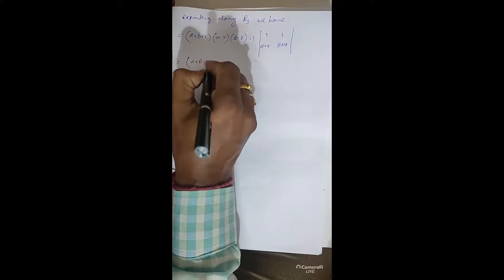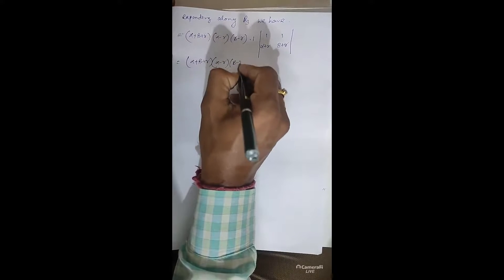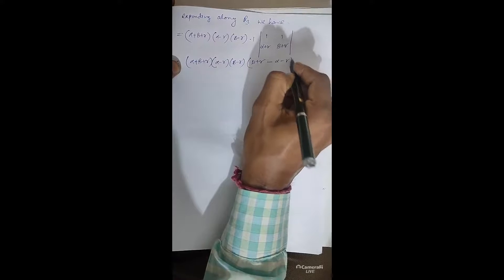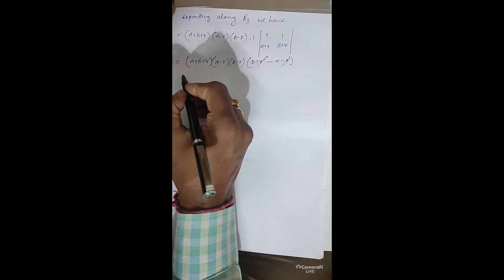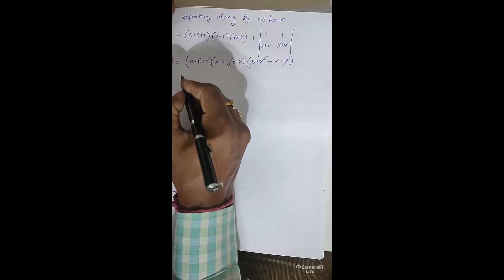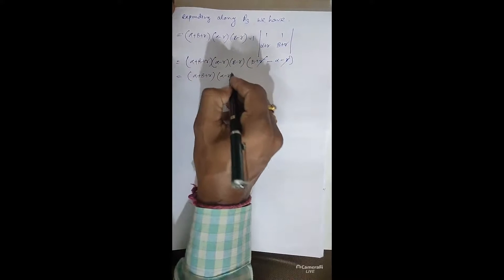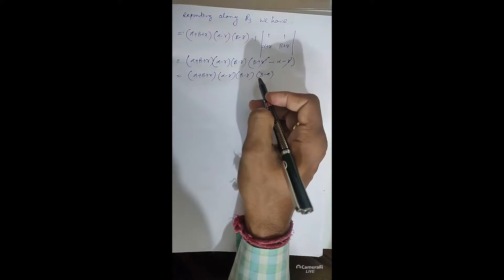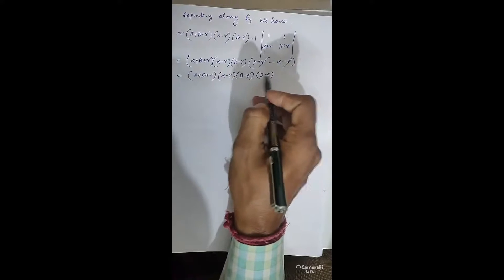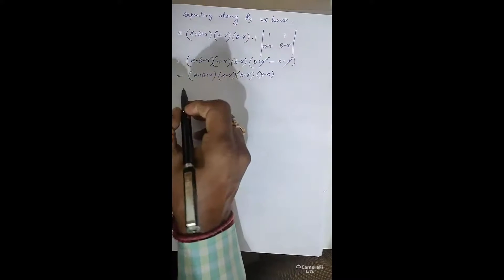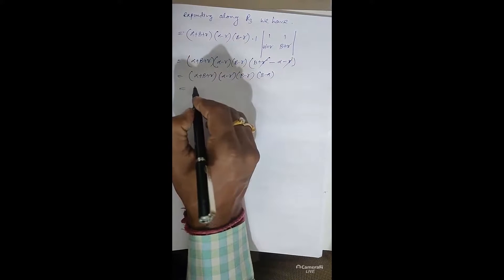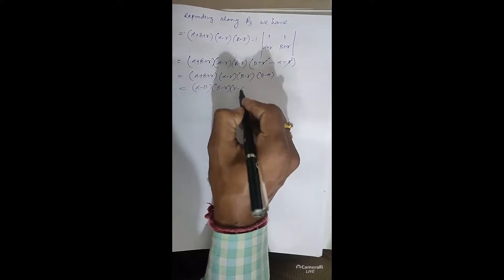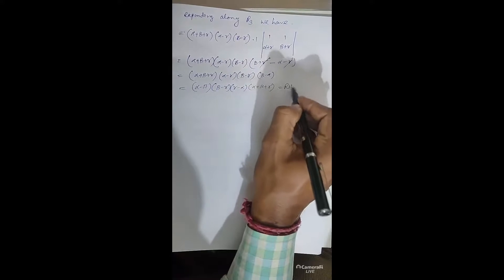Therefore we have (α+β+γ)(α−γ)(β−γ)(β−α). Taking −1 common from (α−γ) gives (γ−α), and taking −1 common from (β−α) gives (α−β), with both negatives cancelling. So this equals (α−β)(β−γ)(γ−α)(α+β+γ) = RHS. Proved.